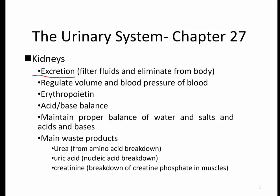The kidneys — I'll remind you from our cardiovascular unit — are also an endocrine gland. They are the primary site for producing and releasing erythropoietin, which will help increase red blood cell count.